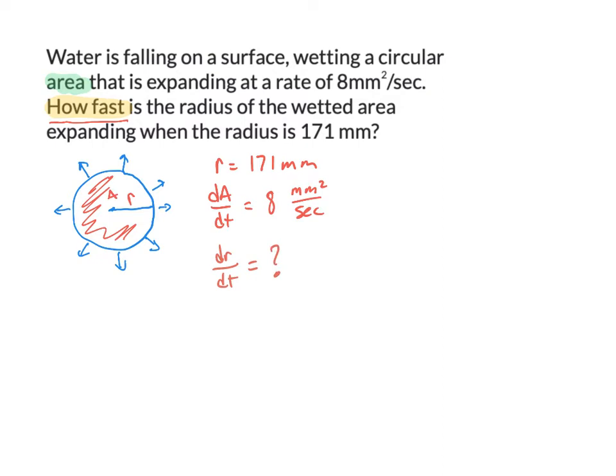After drawing a picture, labeling changing measurements with variables, and listing information from the problem, our next job is to write an equation that relates the variables. You may find equations from different areas of math. In this case, since we're dealing with area and radius, we know from geometry that A equals π r squared. That formula relates A and r — the only two variables we have.